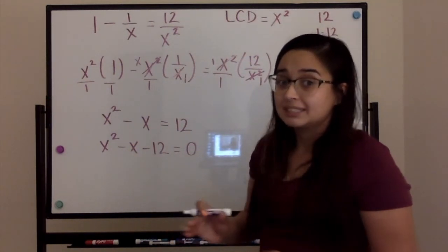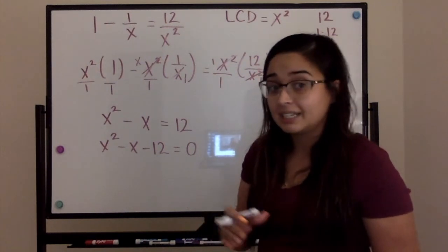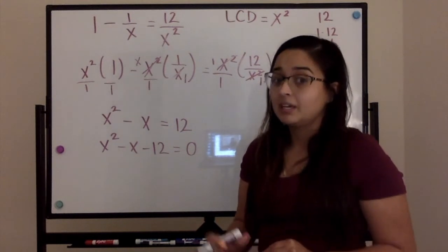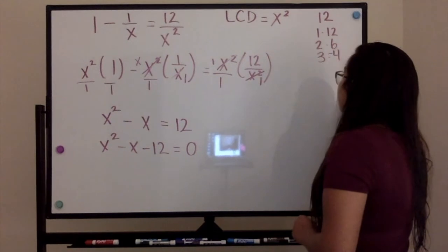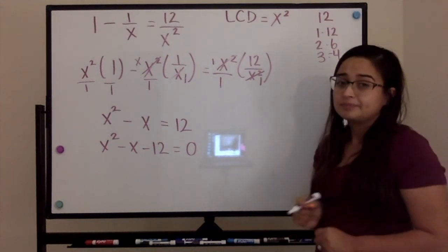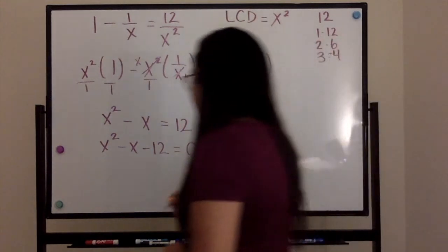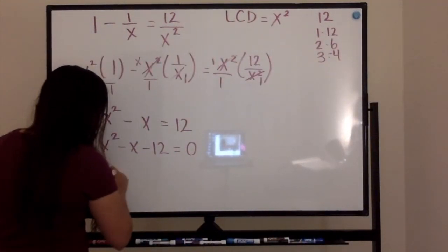So since that negative, I'm sorry, since that one is a negative, I know that my largest number is going to have to be negative. So I know that three minus four gives me a negative one. So those are my two numbers I'm going to be using. So when factoring this out,